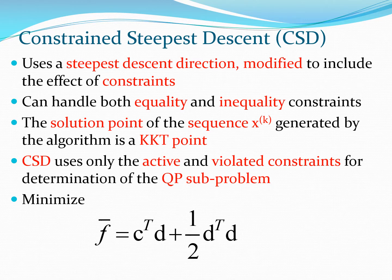The constrained steepest descent method takes the steepest descent direction, which if you recall is C equals minus D, or D equals minus C, and it modifies this steepest descent direction to include the impact of constraints.